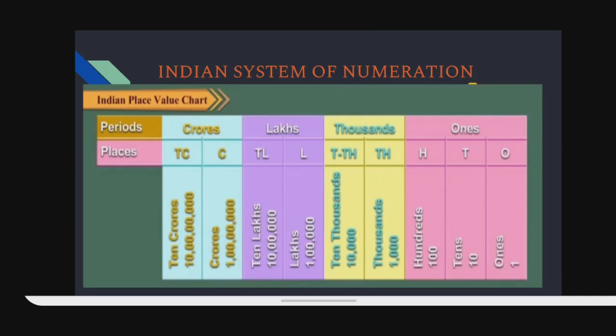The Indian system of numeration consists of periods and places. There are 4 periods and 9 places. The first period is known as the ones period. The ones period has 3 places: first, ones; second, tens; third, hundreds.